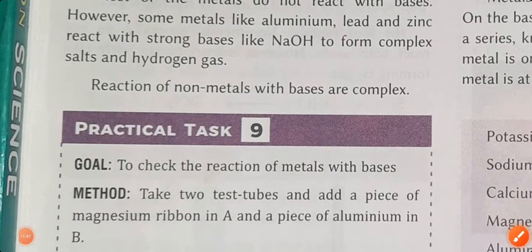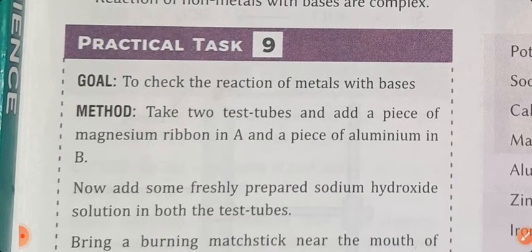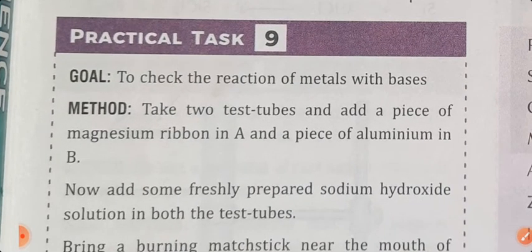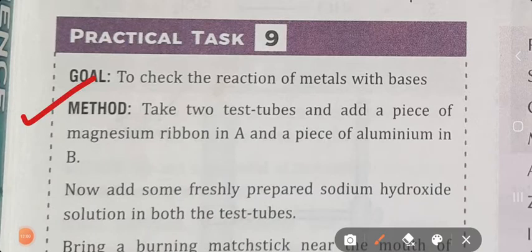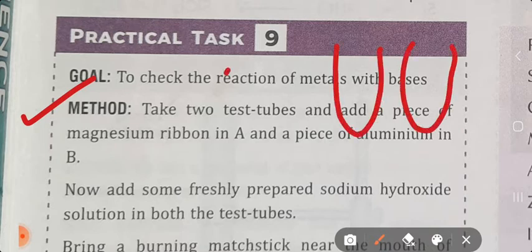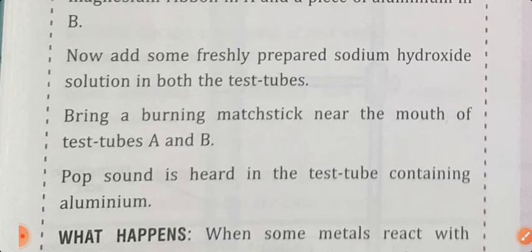Now let's see practical task number 9 - to check the reaction of metals with bases. यहाँ पर reaction of metal देखना है bases के साथ। Method: take two test tubes and add a piece of magnesium ribbon in A and a piece of aluminium in B.